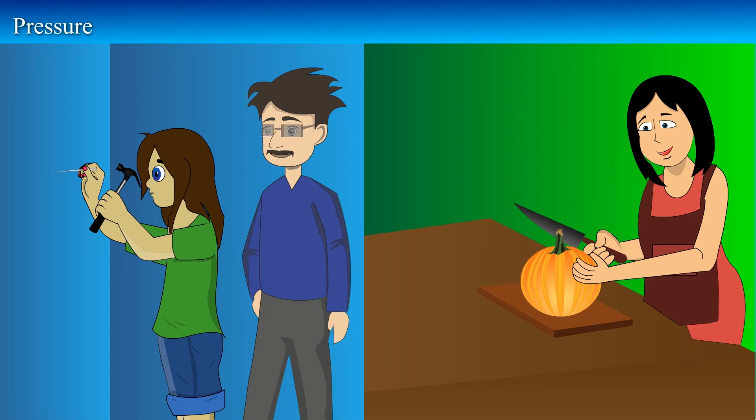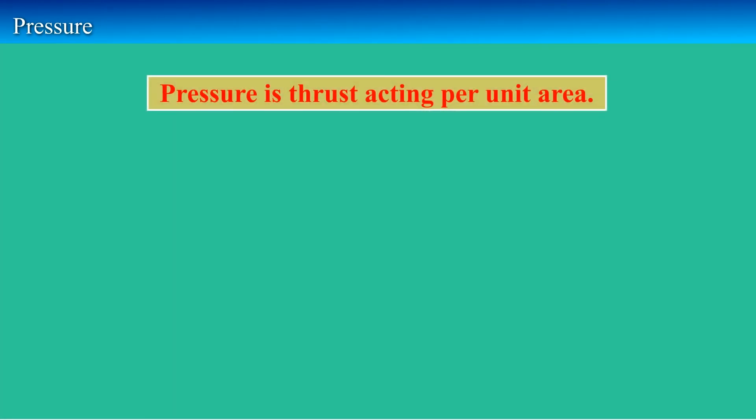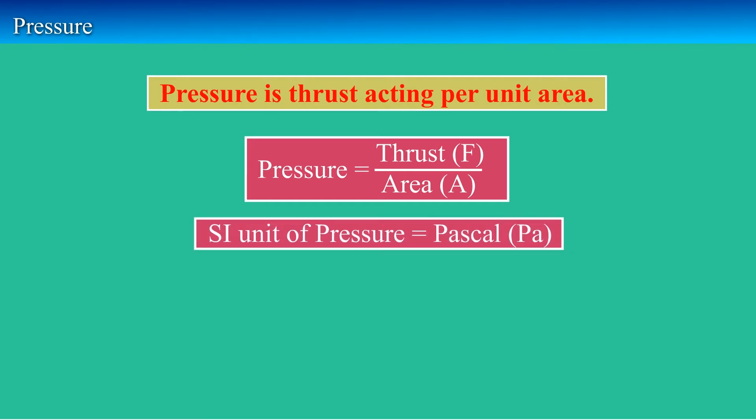When thrust is applied on a surface, pressure is created. That is why when you try to push the nail or when your mom cuts a fruit using a knife, pressure is created at the pointed end of the nail and the sharp edge of the knife. Pressure is thrust acting per unit area, denoted by letter P. Hence pressure is calculated as thrust upon area. The unit of pressure is Newton per meter square. The SI unit of pressure is called Pascal, denoted as Pa.